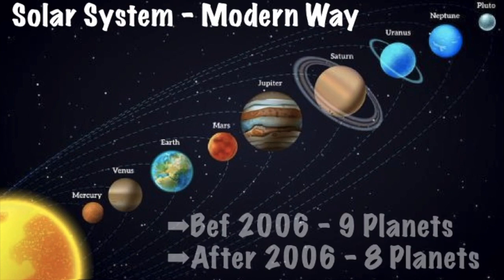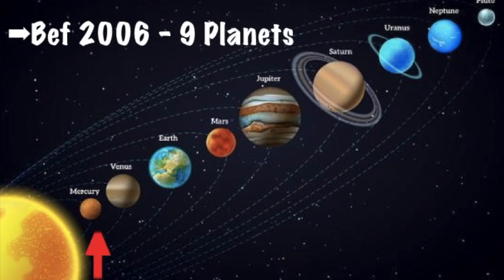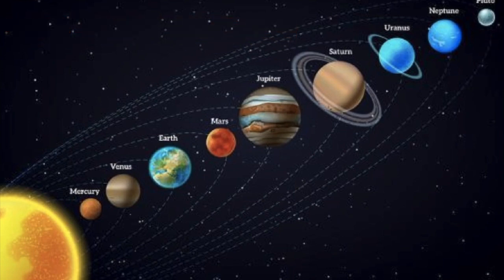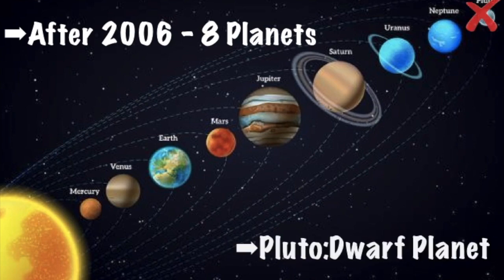Let us see the modern way classification. Before 2006 there were nine planets: Mercury, Venus, Earth, Mars, Jupiter, Saturn, Uranus, Neptune and Pluto. After 2006 there are only eight planets. Pluto was removed from the planet category and it is classified as a dwarf planet.